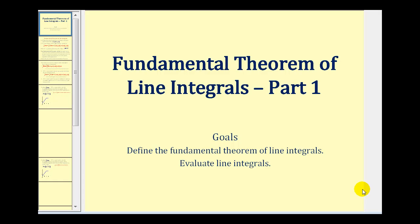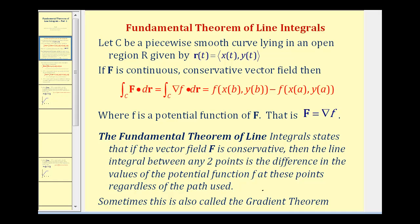Welcome to part one of the Fundamental Theorem of Line Integrals. The Fundamental Theorem of Line Integrals states that if a vector field is conservative, then the line integral between any two points forming curve C is the difference in the values of the potential function, little f, at these two points, regardless of the path. So the line integral would be path independent. This is also sometimes called the gradient theorem.